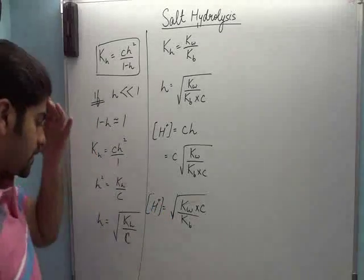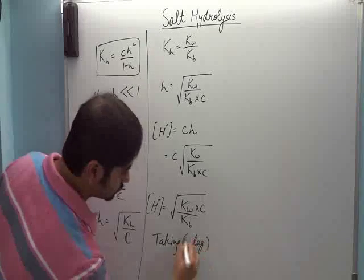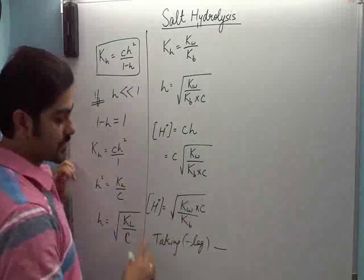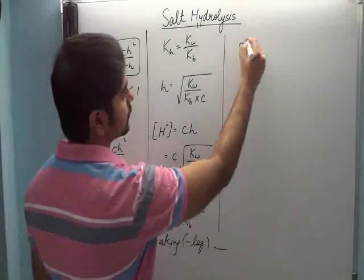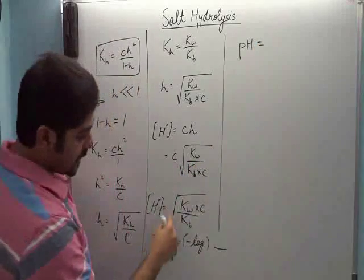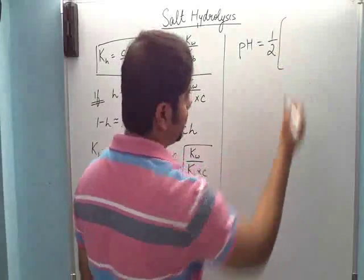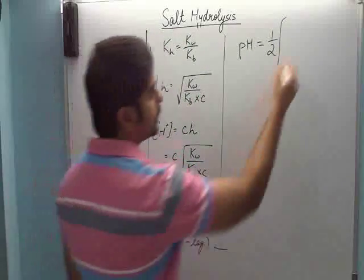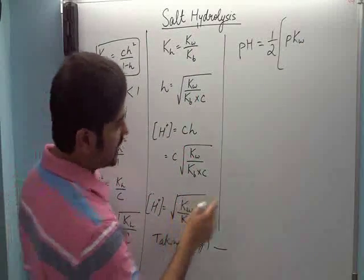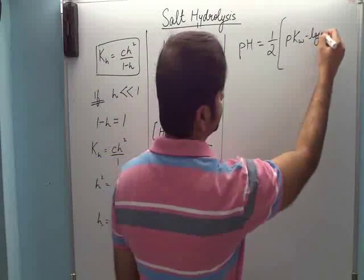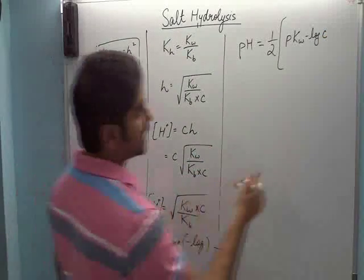Now taking minus log on both sides. What we get: minus log of H plus. You will get pH. Under root ka minus log loge to half bahar aayega. Minus log of Kw you get pKw. Minus log of Kb, minus log of C. And minus log of 1 by Kb.